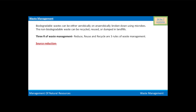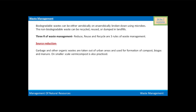First of all, we will know about source reduction. Garbage and other organic waste are taken out of urban areas and used for formation of compost, biogas, and manure. On a small scale, vermicompost is also practiced.